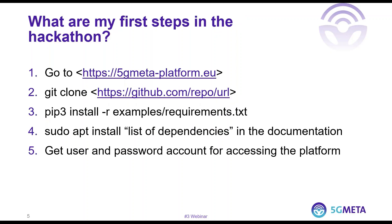Now let's see what are the first steps that you will need to take in order to start receiving data. First, you will go to the documentation page at the link that is provided and you will familiarize yourself with the content of the documentation. Then, you can use git to clone to your laptop the repository link that is shown in the documentation. This will contain all the code samples that you can modify in order to implement your service. You will need also to install some dependencies using both pip, which is the package manager for Python, and apt, which is the package manager for Linux. All of these steps will be described in the documentation. Remember that each team participating in the hackathon will be provided with a username and a password in order to access the platform itself.